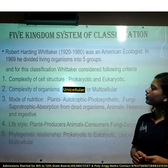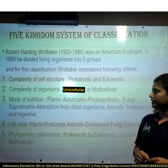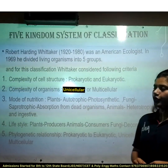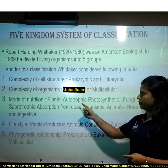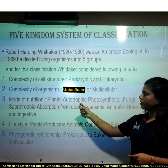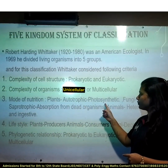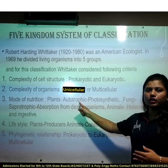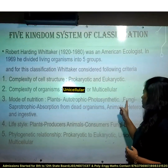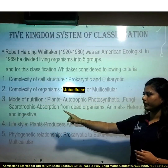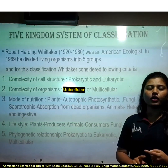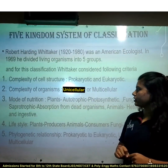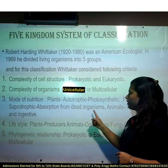Second, complexity of organisms, that is unicellular or multicellular. Then mode of nutrition: plants are autotrophic and their mode of nutrition is photosynthetic. Autotrophic means they produce their own food. Fungi are saprotrophic, meaning they depend on dead or decaying organic matter, and their mode of nutrition is absorption from dead organisms.